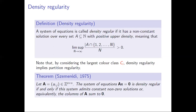Szemerédi's theorem, which is a very famous theorem, asserts that positive upper density sets have arbitrarily long arithmetic progressions, and in particular it's not too hard to show that this implies that a system of linear homogeneous equations is density regular if and only if it admits a constant non-zero solution — in other words, the columns of the corresponding coefficient matrix sum to zero. So if we look at arithmetic progressions, well, 1,1,1,...,1 is an arithmetic progression (admittedly a trivial one), and so this theorem does indeed tell us that sets with positive upper density contain arbitrarily long arithmetic progressions.